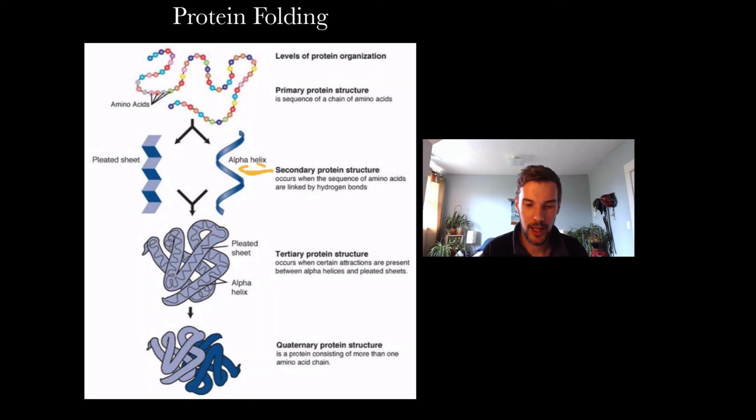The tertiary structure is the four different types of bonding. The quaternary structure is the multiple different polypeptides now coming together to form a big protein.